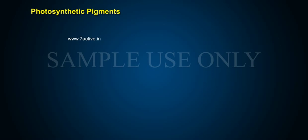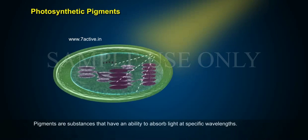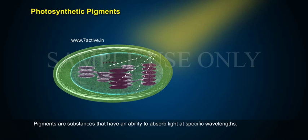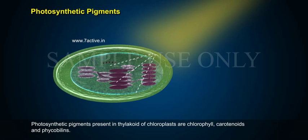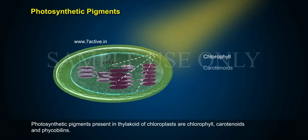Photosynthetic pigments are substances that have an ability to absorb light at specific wavelengths. Photosynthetic pigments present in thylakoid chloroplasts are chlorophyll, carotenoids, and phycobilins.